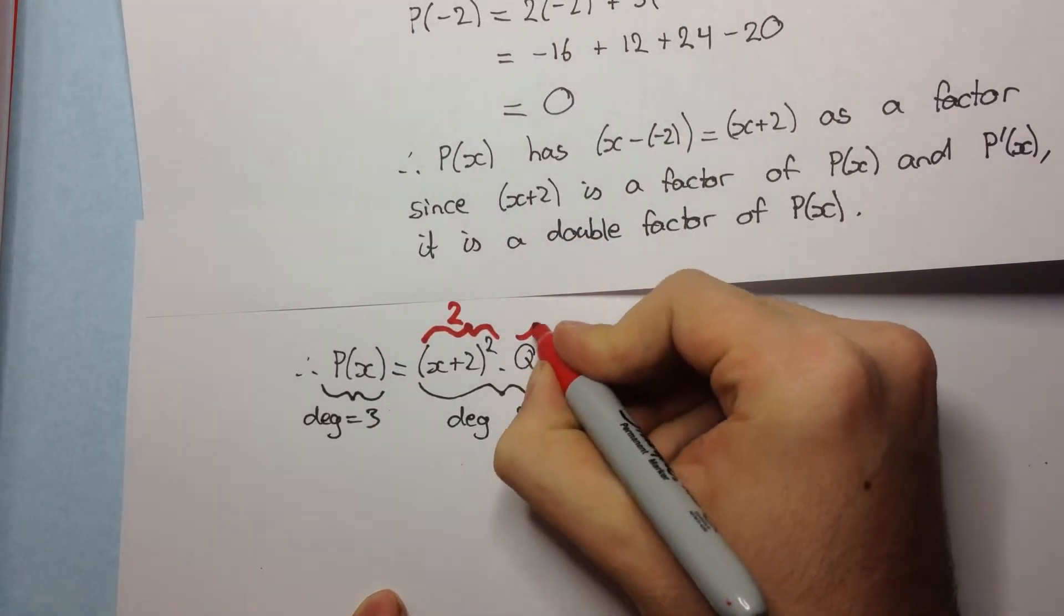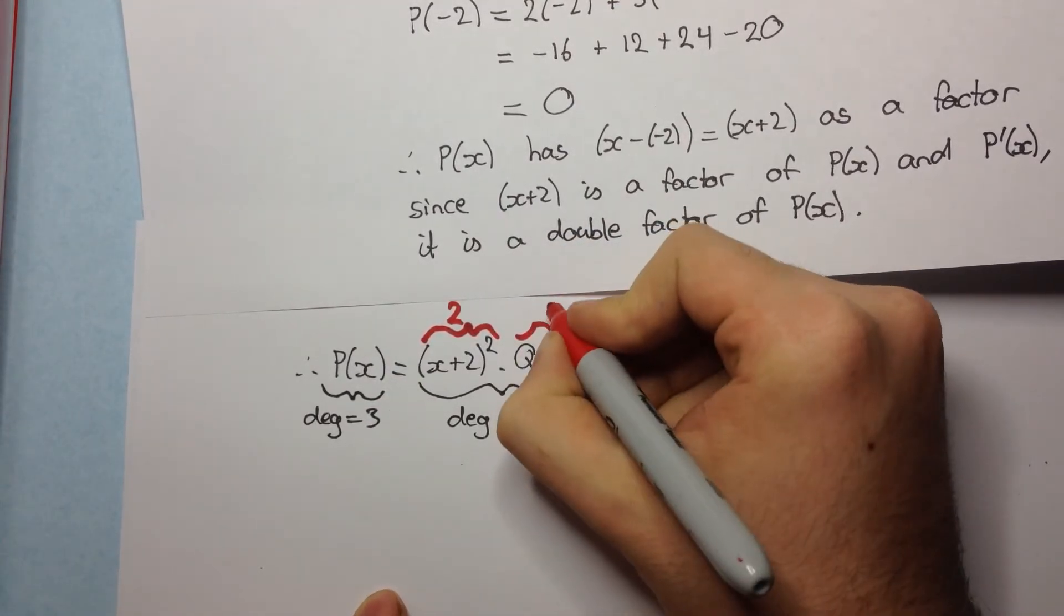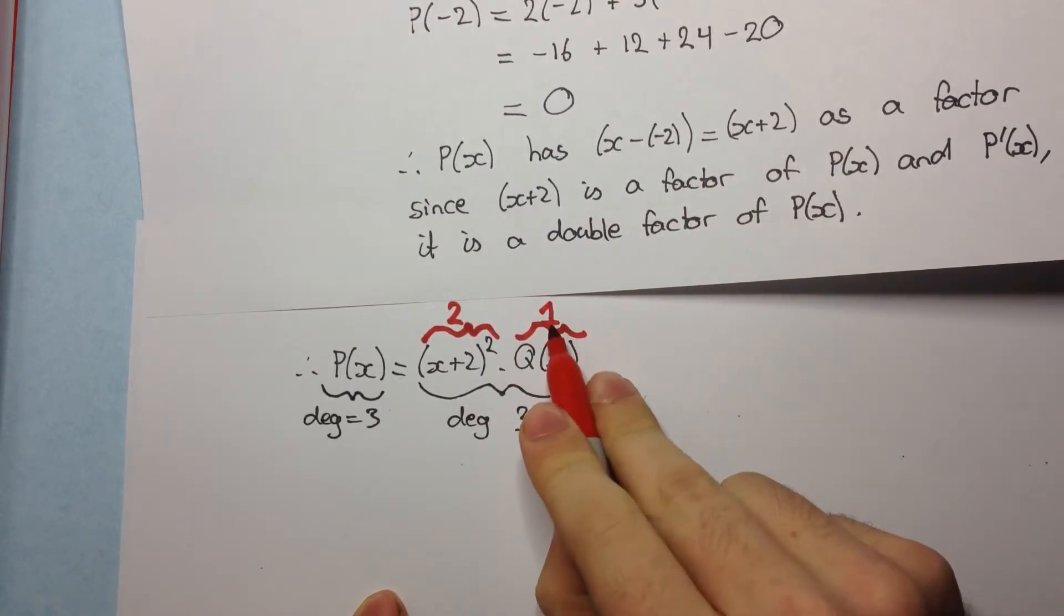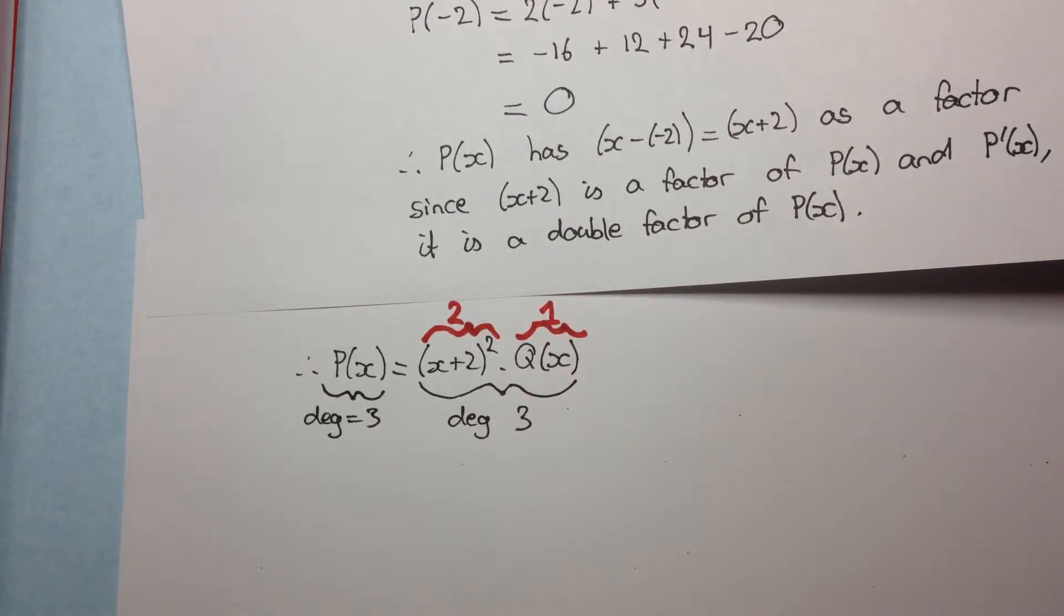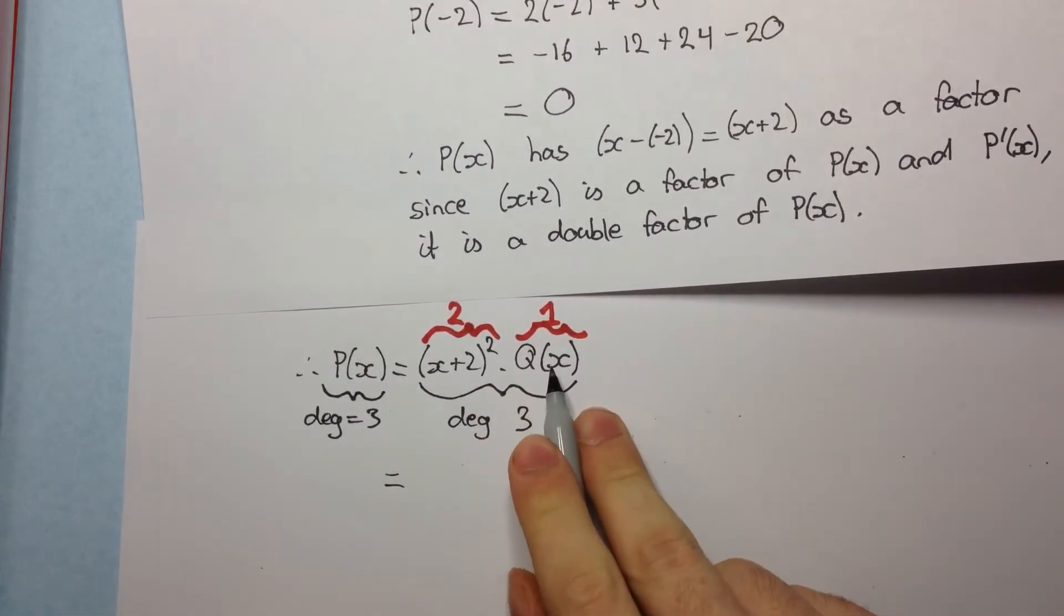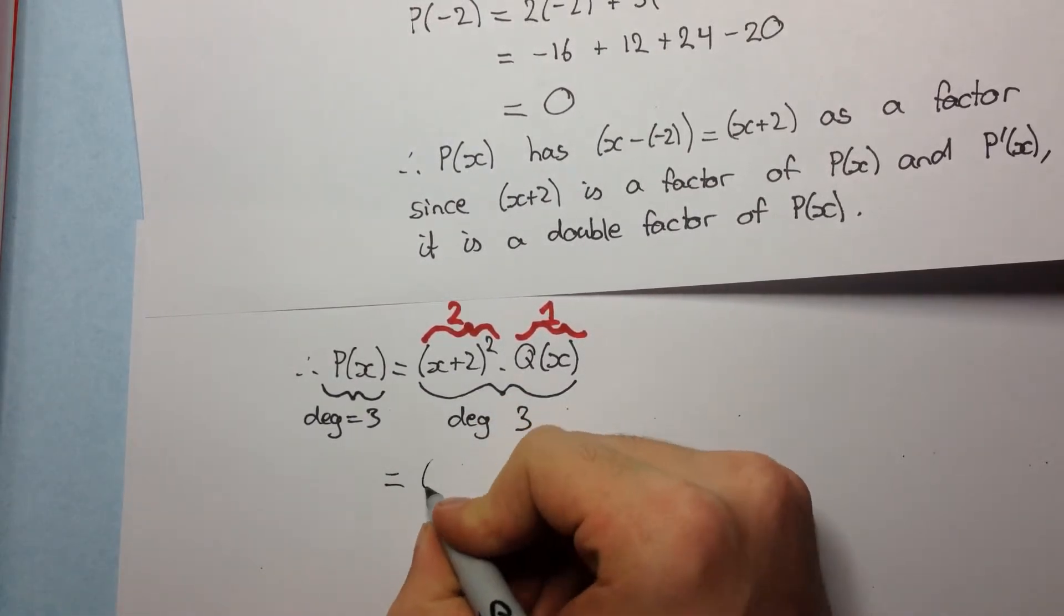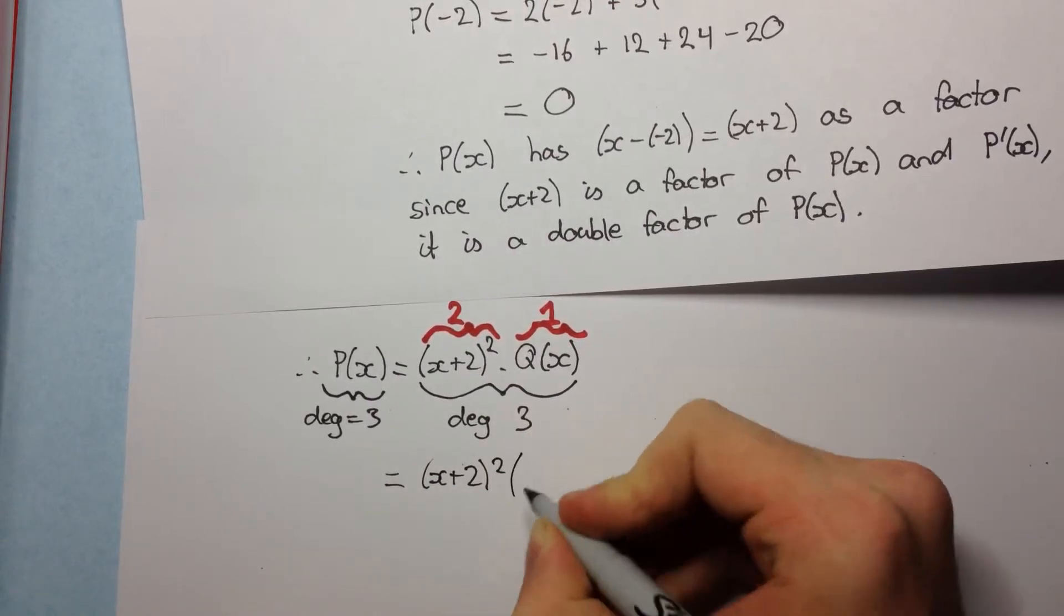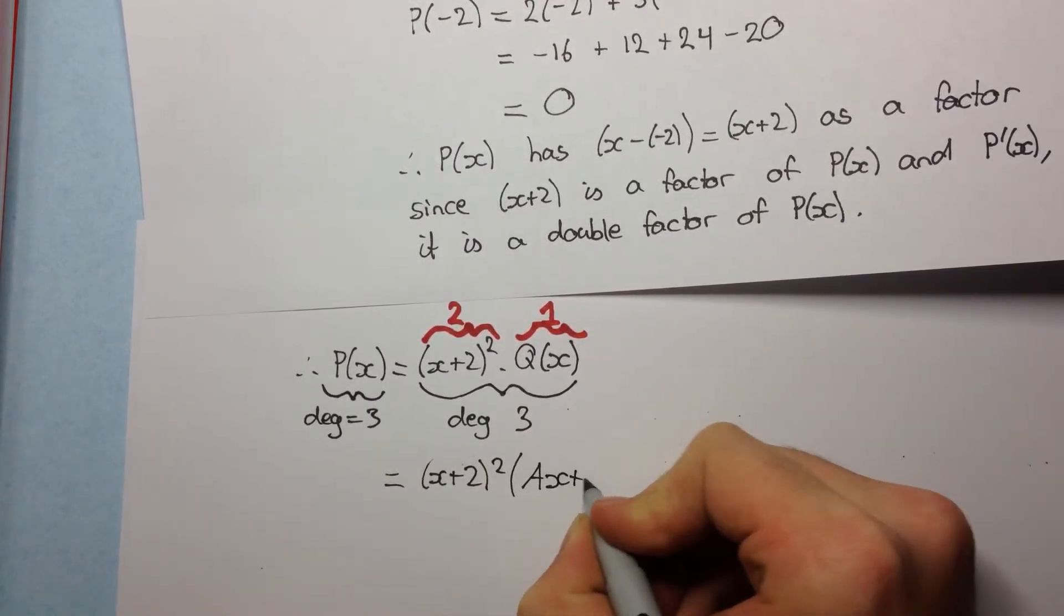So that means here, we need a degree of 1. So therefore, we write Q(x) as a general linear factor. And the general linear factor is Ax + B.